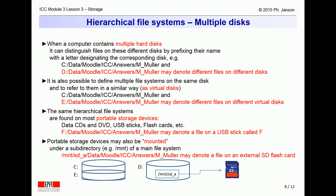This way, for instance, the F device of the previous example can be mounted onto a subdirectory of the D disk, so that a name such as /mnt/sda/data/Moodle/ICC/Answers/M_Mueller could very well denote a file on the external SD flashcard.